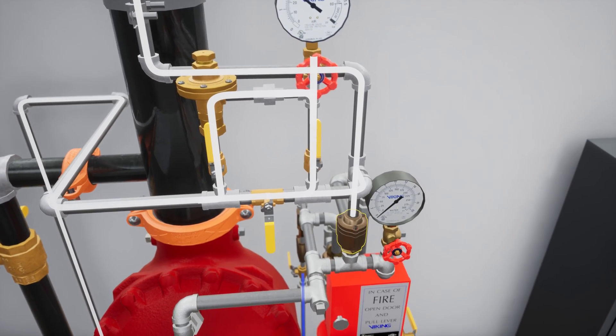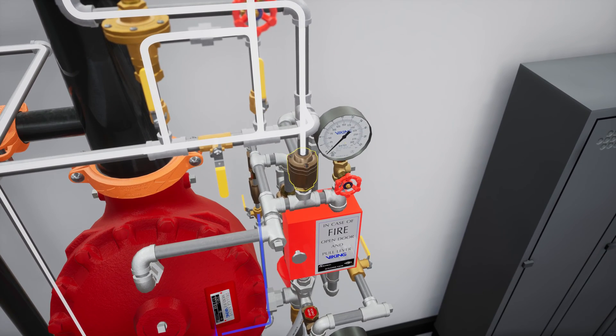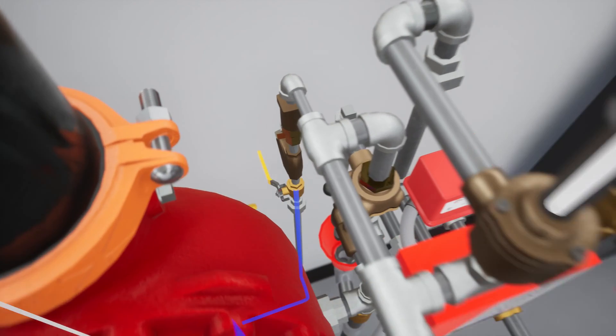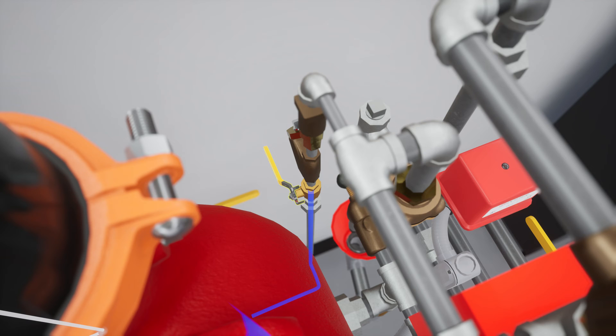After establishing air pressure in the release system, the pneumatic actuator will close. Open the priming valve to establish water pressure in the prime chamber.